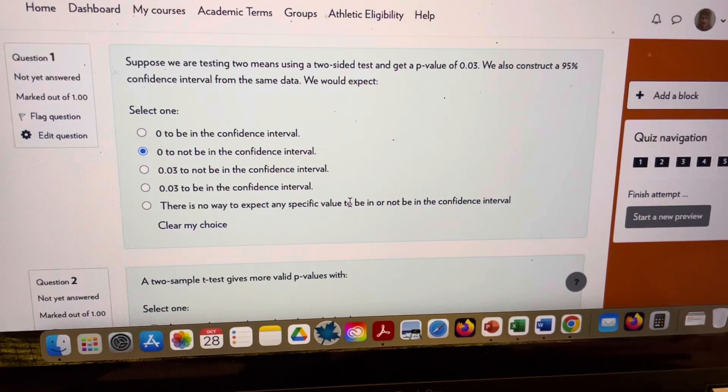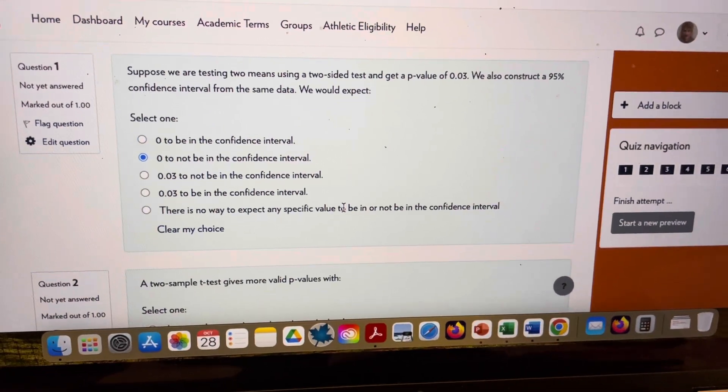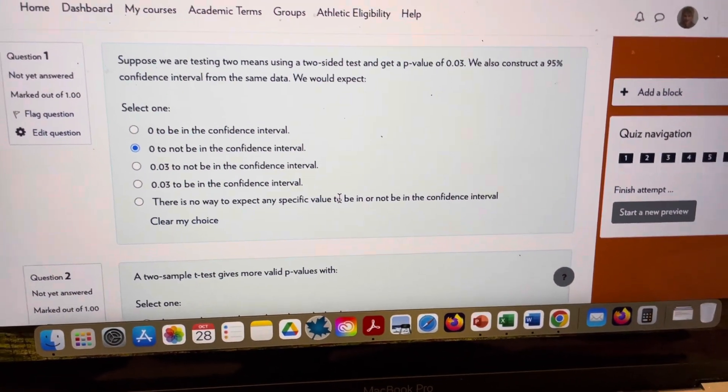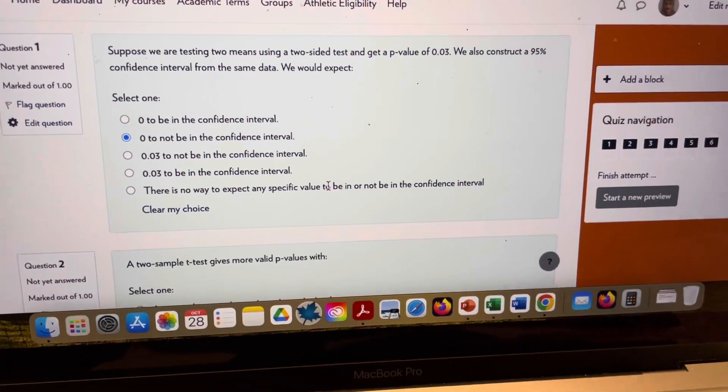We also construct a 95% confidence interval from the same data. We would expect 0 to not be in the confidence interval. Okay, now let me explain why.